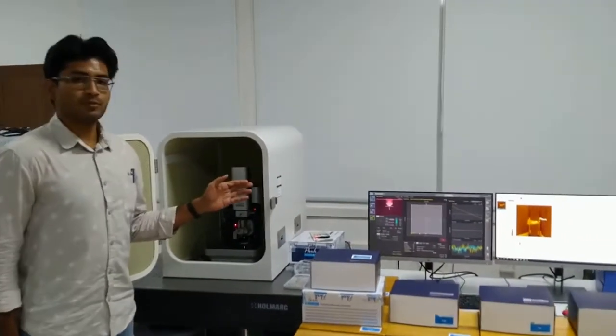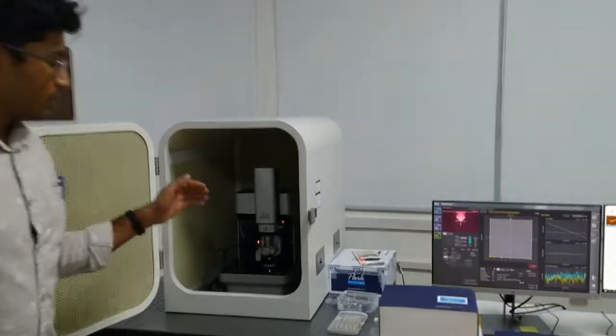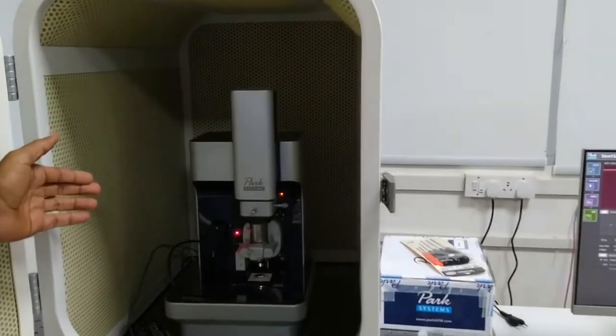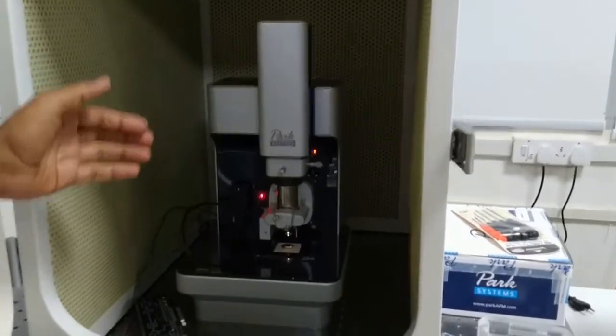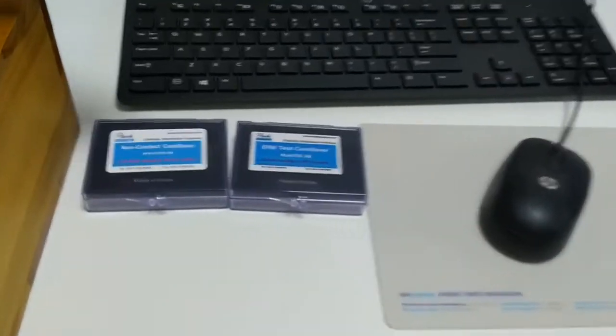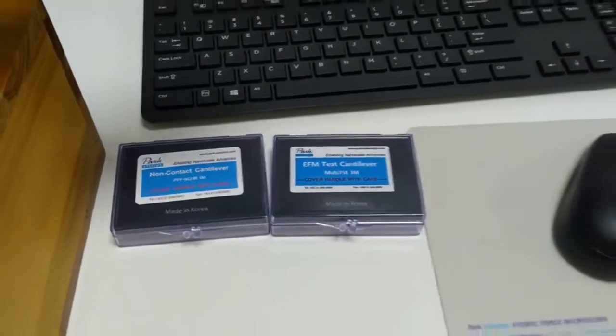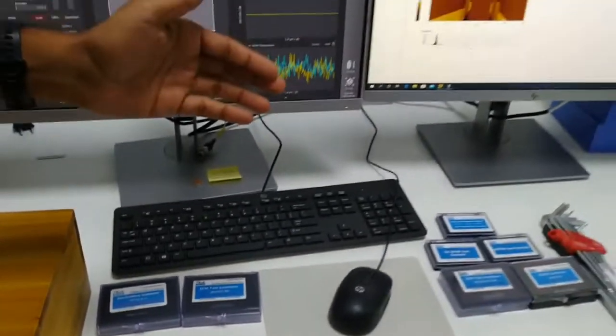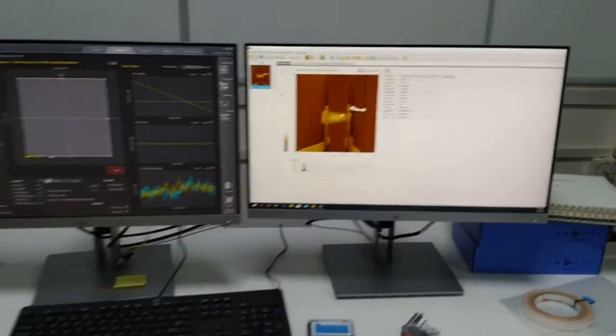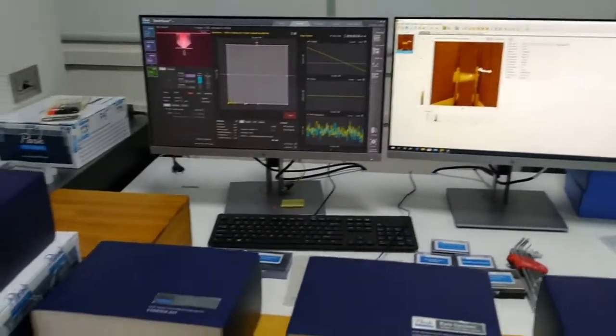Here is the atomic force microscopy setup installed in our lab which is used to characterize different device properties apart from general material characterization. We have a collection of different AFM tips ranging from different modes such as contact, non-contact and tapping mode tips to module specific tips. We have variety of modules available in the lab apart from general topography.